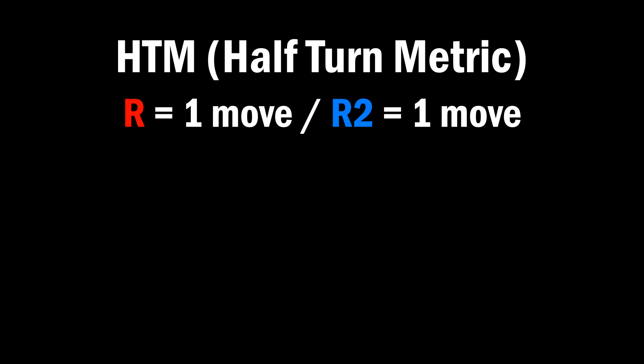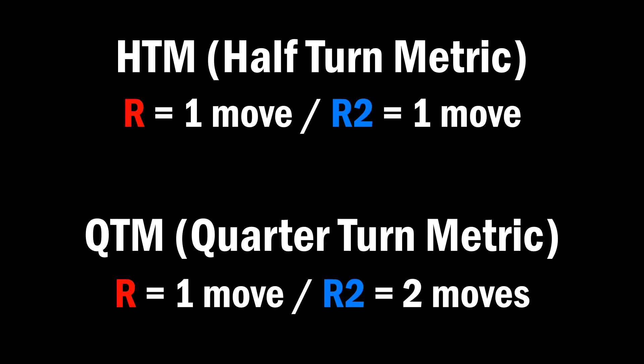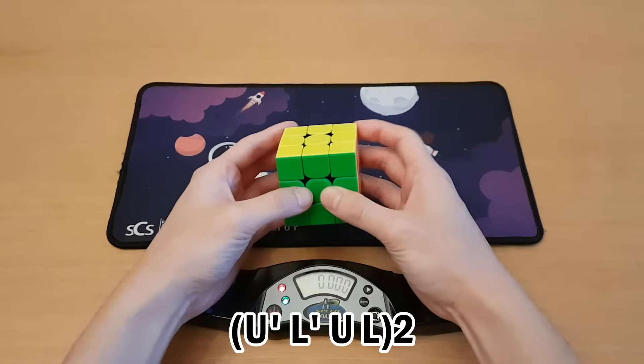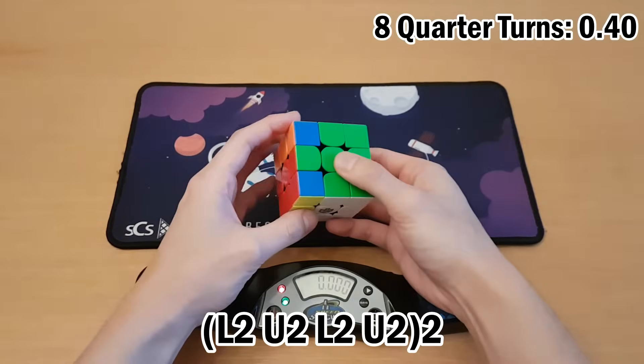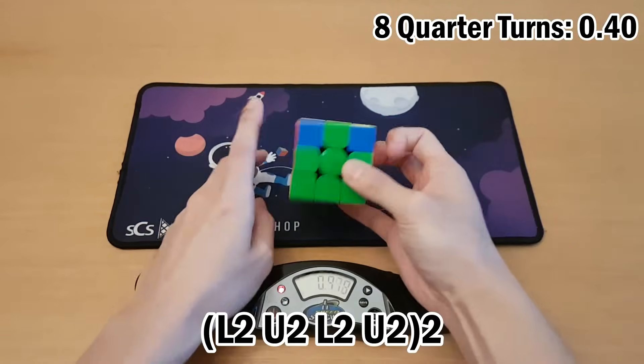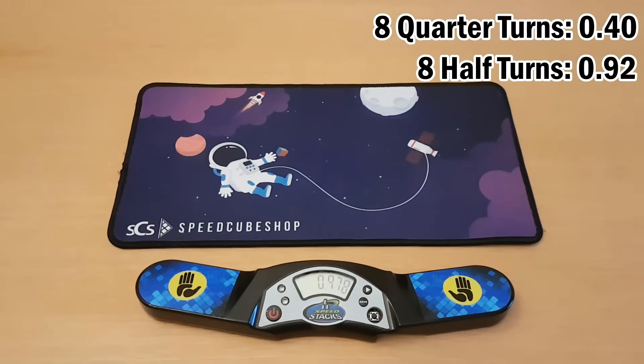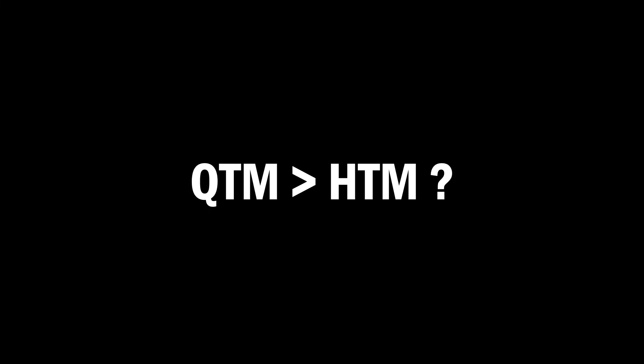Before we get into that, you have to make sure you're plugging the right things into the formula. The first important thing is move count. Two common ways of counting moves are HTM, or half turn metric, and QTM, or quarter turn metric. Here, I'll do eight quarter turns, and now I'll do eight half turns. It took roughly double the time.